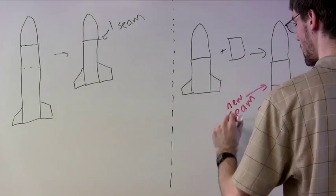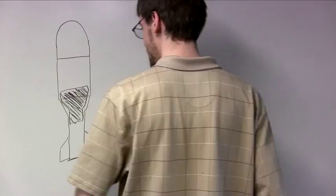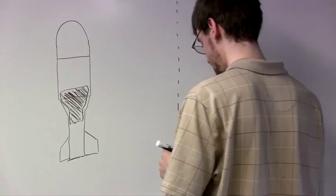One technique to reduce the mass and surface area of the body tube is to use a transition. Carrying an egg requires a fairly wide body tube diameter, but behind the payload section, we can neck down to a smaller diameter for the booster section.